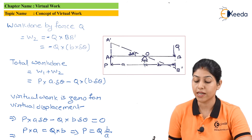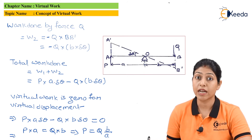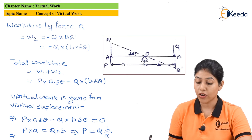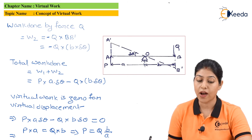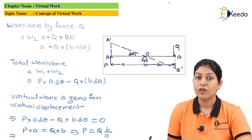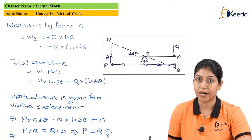With the help of this particular condition of virtual work, we can define the relation between the forces applicable on that particular system. Now if we want to define the direction or sign convention of virtual work, we can define it as per the rotation — either clockwise movement or anticlockwise movement.